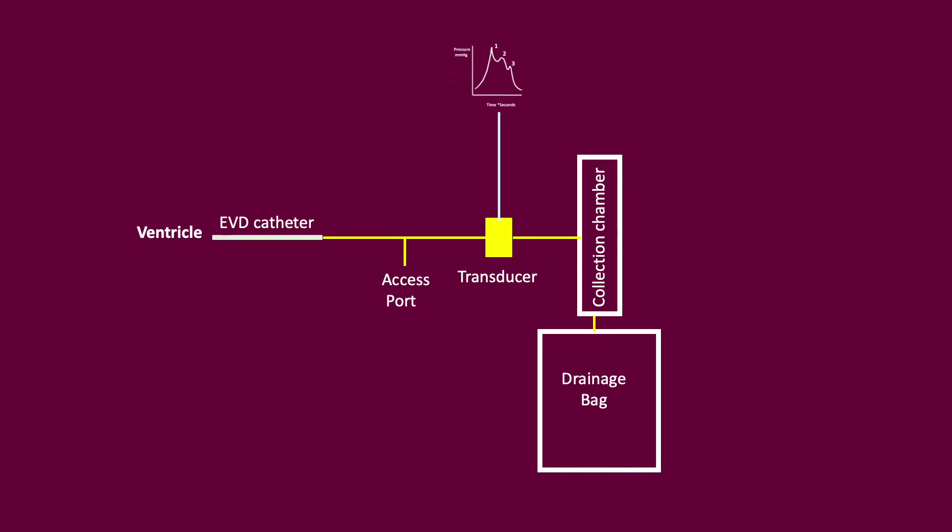Moving from the EVD catheter to the EVD system itself, it consists of essentially five components: tubing, adjustable stopcocks, a transducer and monitor setup, a levelling manifold, and an adjustable EVD burette CSF collection reservoir.